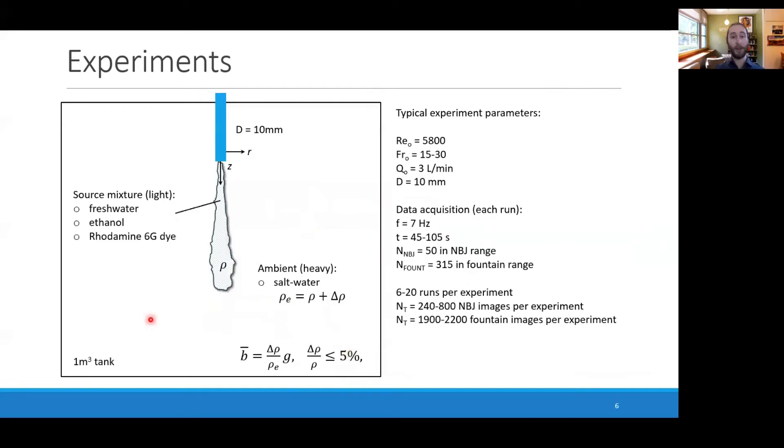Here's another schematic of the experiment. During the initial stage where we were injecting light fluid down into heavier water, the source water is a mixture of fresh water, ethanol, and rhodamine dye, and the ambient is salt water. This will descend into the tank and then return up, collapsing back onto itself, forming that fully developed fountain stage.